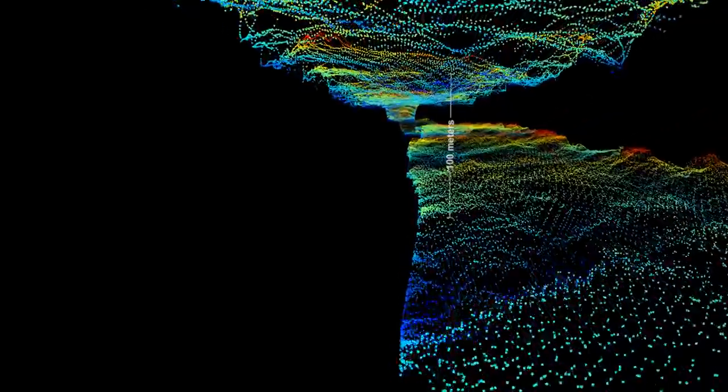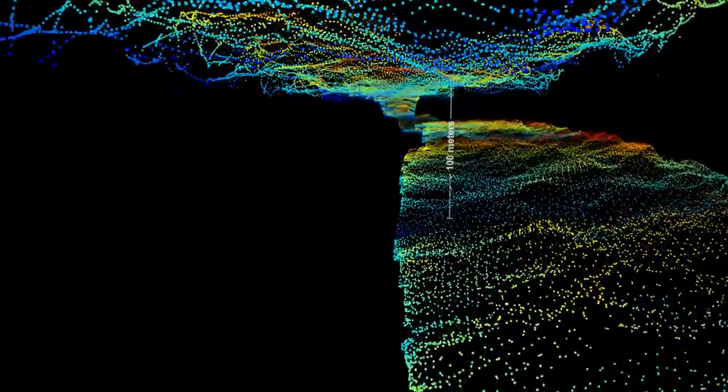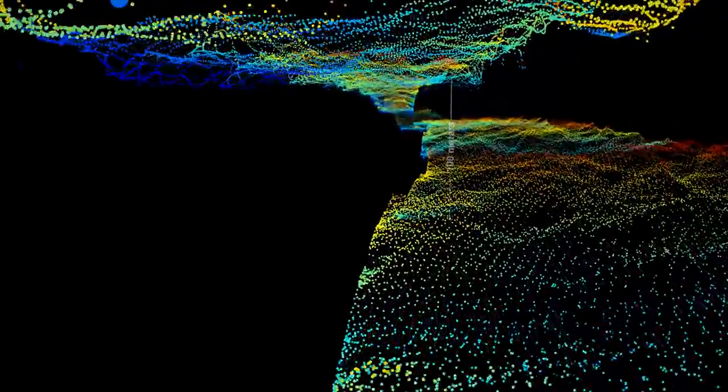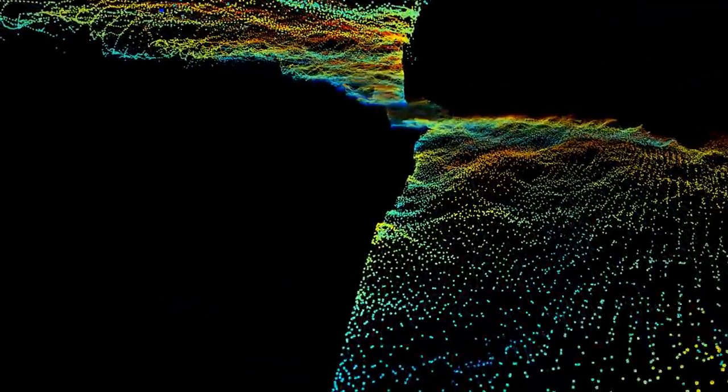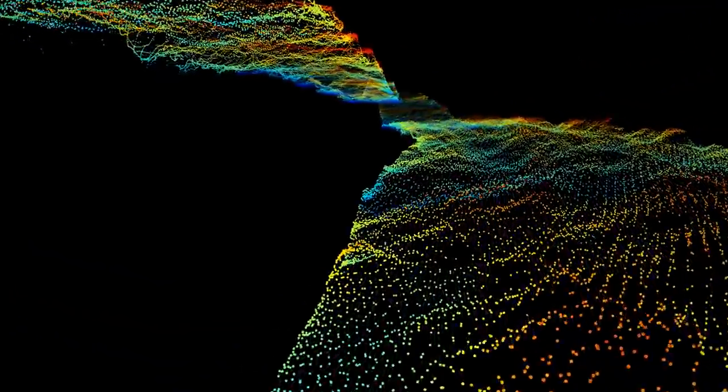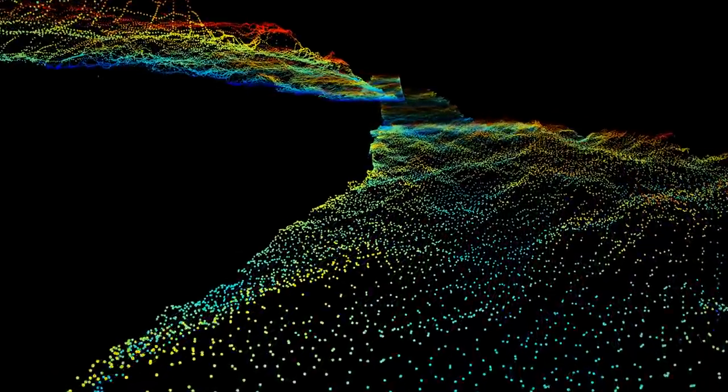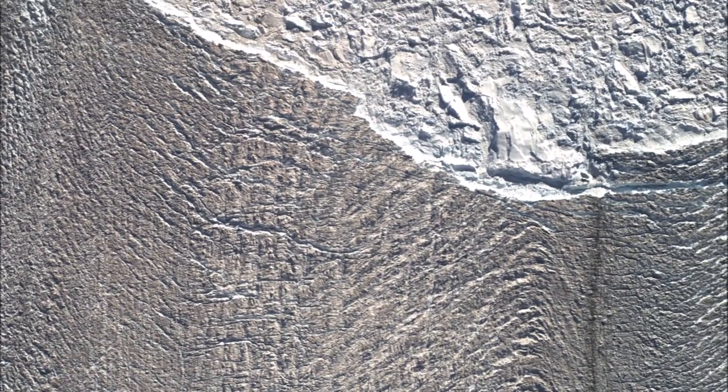NASA's Operation IceBridge, which has been measuring Greenland since 2009, has added to the laser data from previous missions with new instruments, like ice-penetrating radar, a magnetometer, and a gravimeter. It's also used a high-resolution camera system, taking overlapping images of the ice throughout its eight-hour flights.